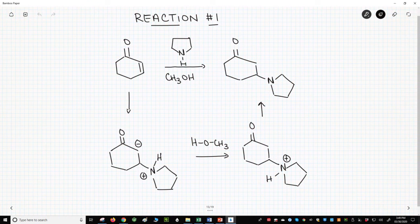Reaction number one is on the screen. This is cyclohexenone and pyrrolidine. Cyclohexenone is an alpha-beta unsaturated ketone, a perfect Michael acceptor, and the amine is a Michael donor.